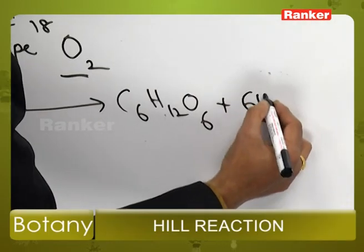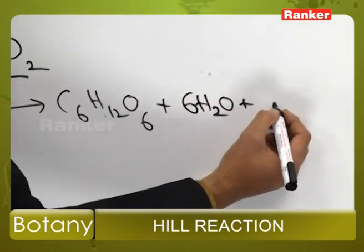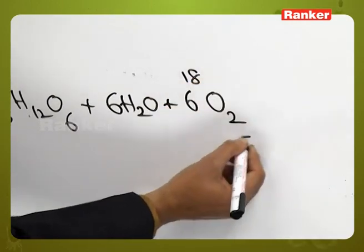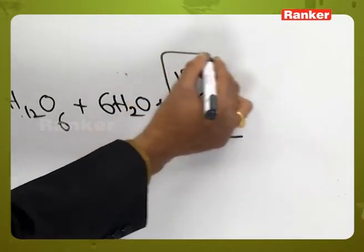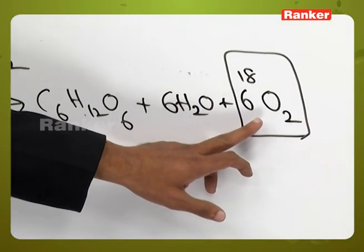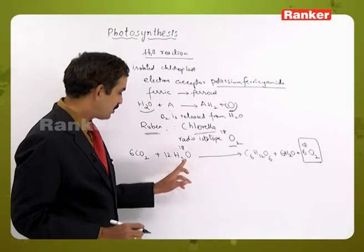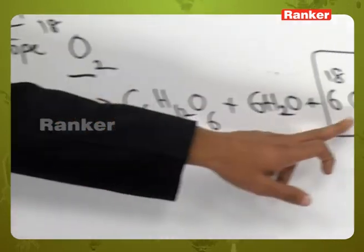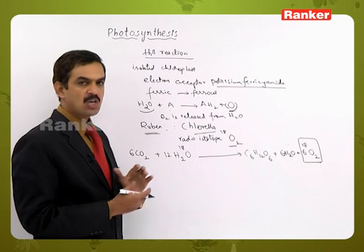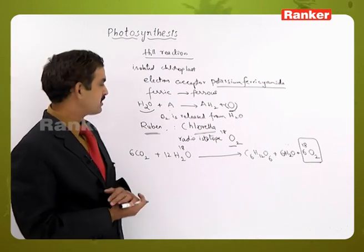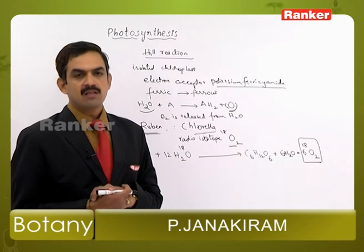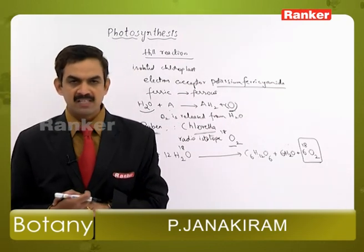Along with this, six molecules of water and six molecules of oxygen are released. The oxygen released contains the radioisotope O18. This shows that the oxygen evolved during photosynthesis comes from the water molecule, not from carbon dioxide. This experiment was conducted by Ruben to demonstrate that water is the source of oxygen released during the photosynthetic process, using Chlorella.